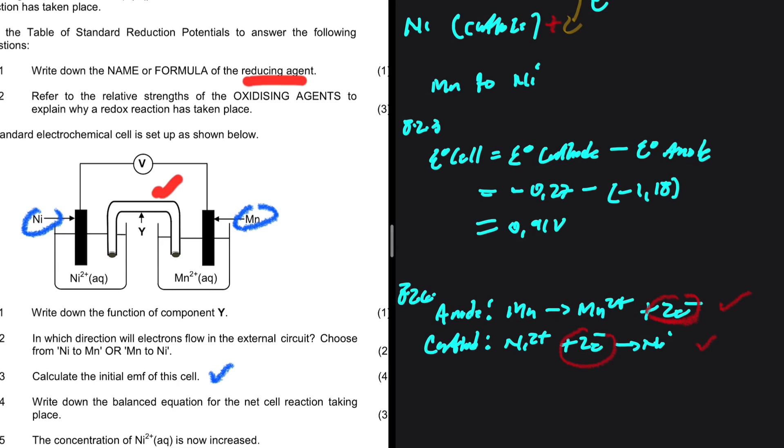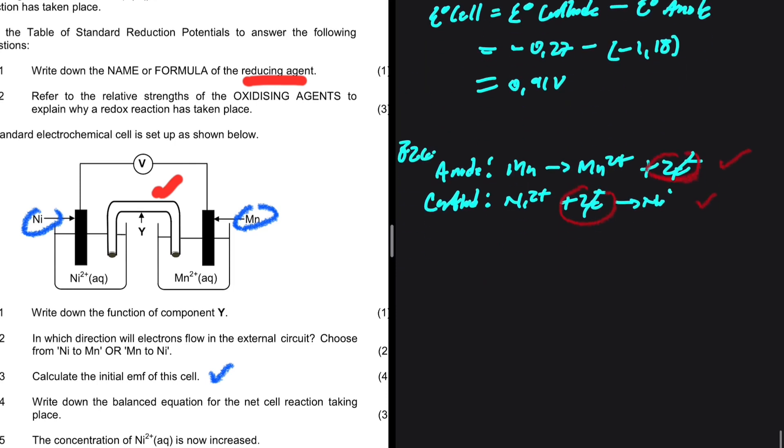So in order to find the net cell reaction, we add the left-hand side of the two equations and the right-hand side of the two equations. But we can ignore the electrons. We have 2 electrons on the left and 2 electrons on the right. They're just spectators. We're adding Mn and Ni2+, so we have Mn plus Ni2+ to give us Mn2+ plus Ni. This is the net cell reaction.